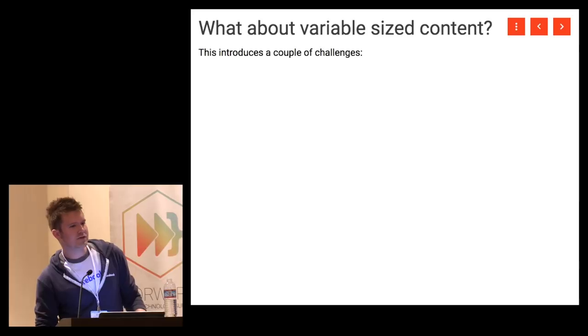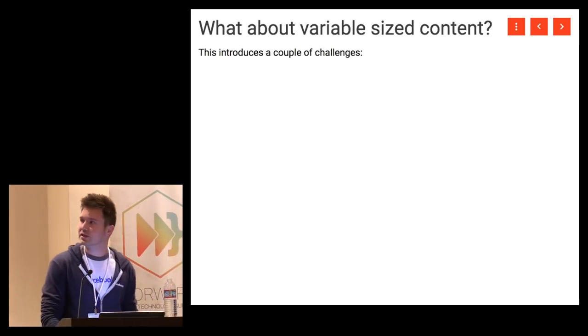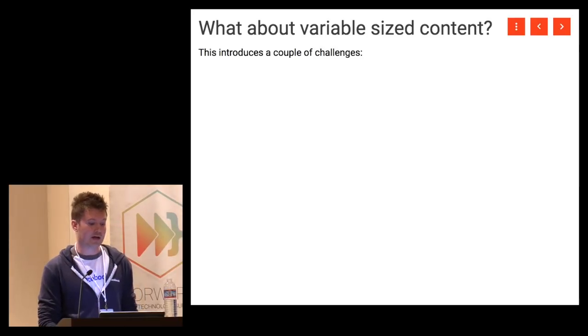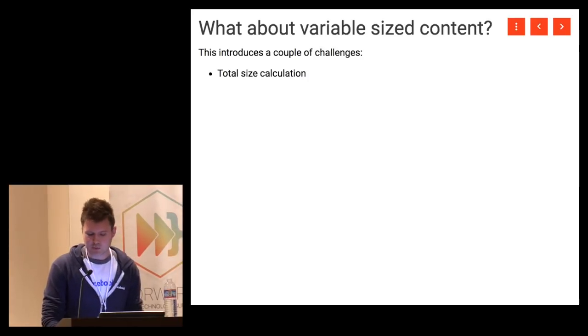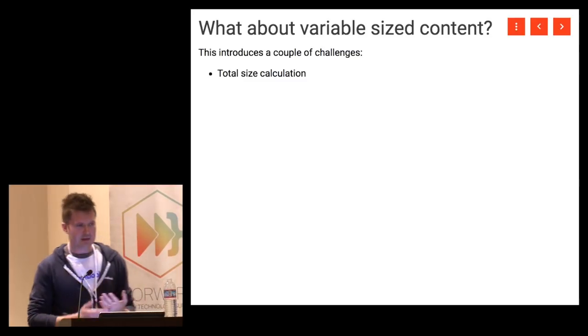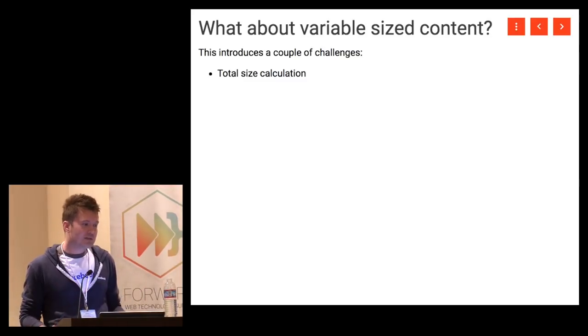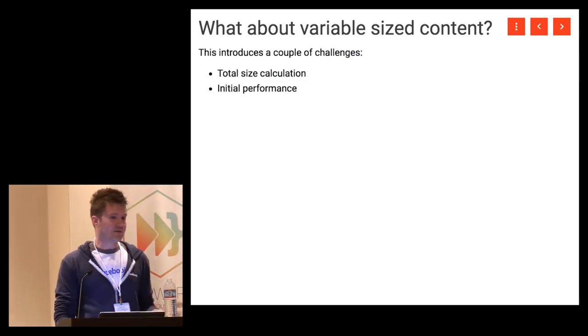Now let's look deeper at some challenges in windowing. The first is variable-sized content. In previous examples all rows were the same size, which makes the calculation easy. But if rows have different heights it's tricky — how do I know how big to make the large scrollable div if I don't know the size of items? I could measure everything up front, but then I kill initial performance and we're back to the four-second list. So windowing would be pointless at that point.